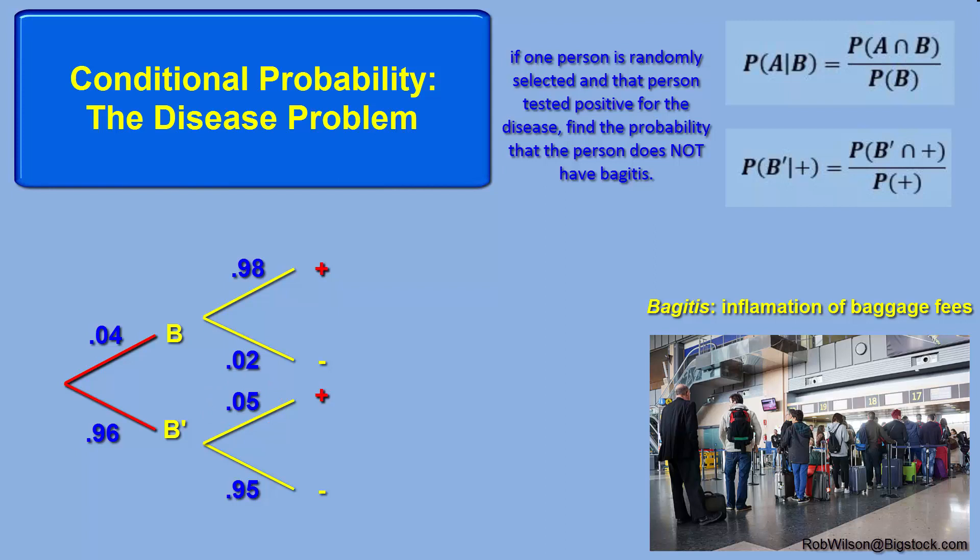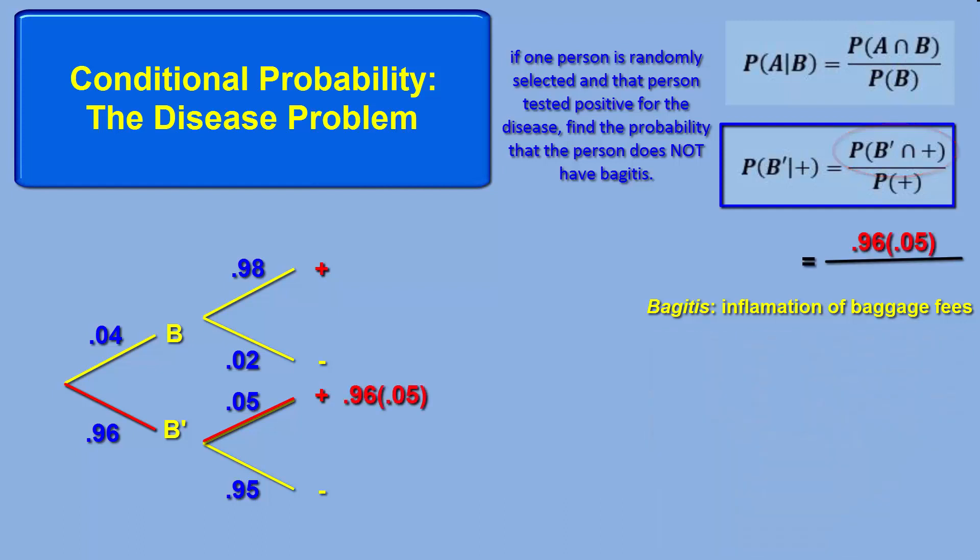Here's our conditional probability formula. The numerator must be the probability of not having the disease and testing positive. We multiply .96 times .05 and get .048. Note that we are not multiplying by the overall rate of testing positive, and this is why multiplication is appropriate here, regardless of whether we look at this as two observations or one.